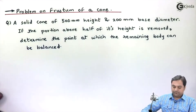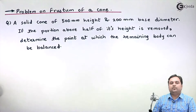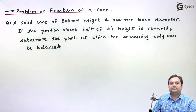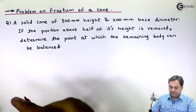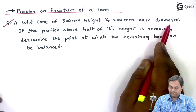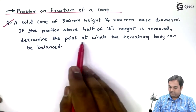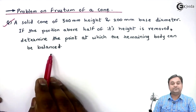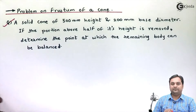In this video I will take the problem on frustum of a cone. A frustum of a cone means a cone which is cut. We have to find the center of gravity for that frustum. The problem: a solid cone of 500 mm height and 200 mm base diameter — if the portion above half of its height is removed, determine the point at which the remaining body can be balanced. That point is nothing but the center of gravity, which is the point about which the total weight acts.